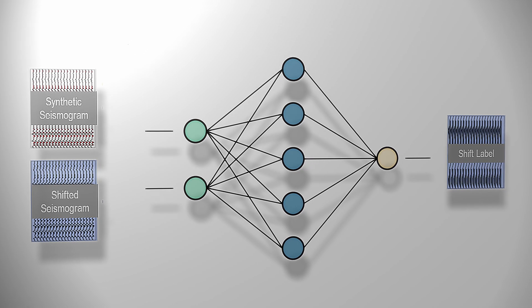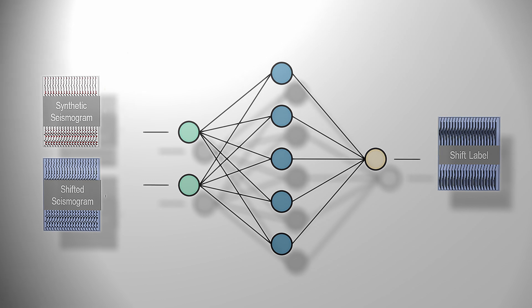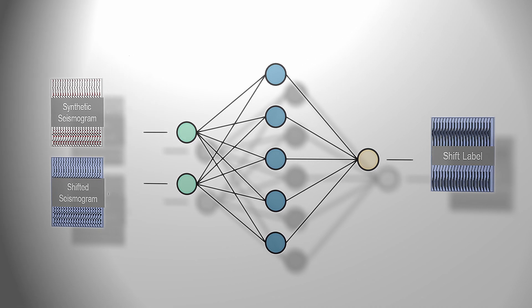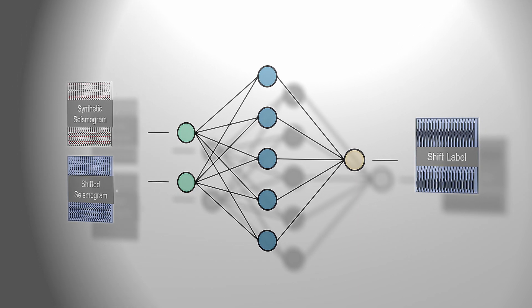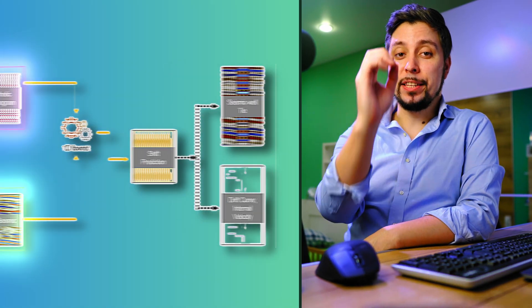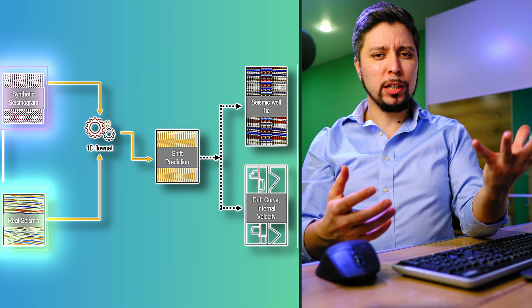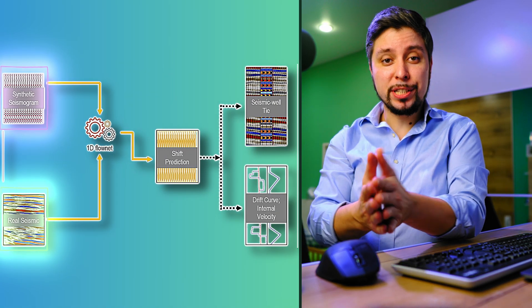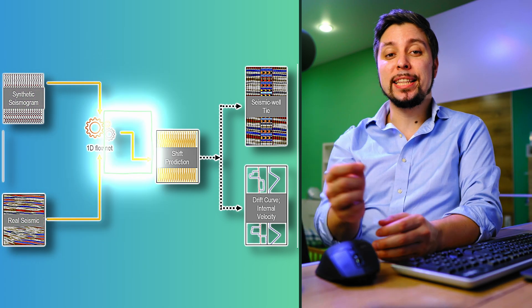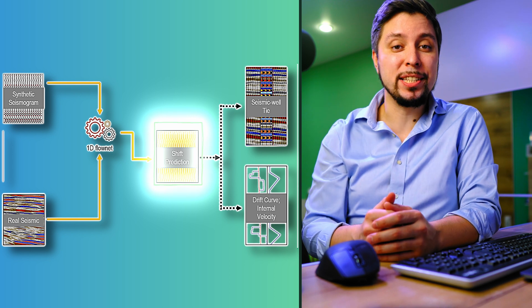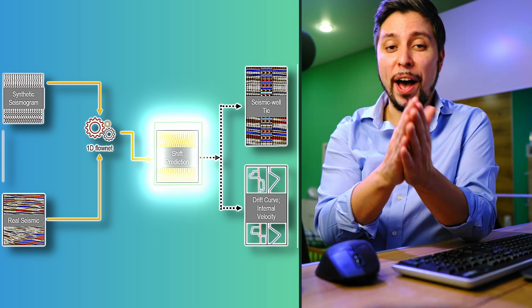For ML training, the generated seismograms are used to train a 1D FlowNet, which learns from pairs of original and shifted seismograms and aims to estimate the time shift. Once trained, the inference track is followed: the synthetic seismogram from the original time-depth function and the real seismic trace are fed into the network, which estimates the time shift required to revise the time-depth relation for optimal alignment.